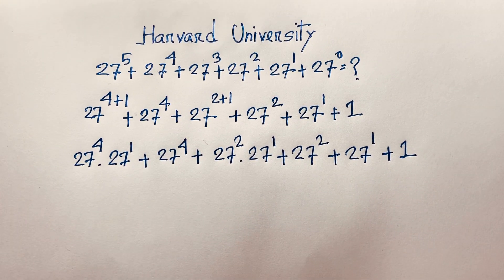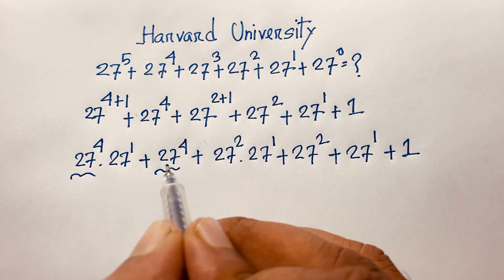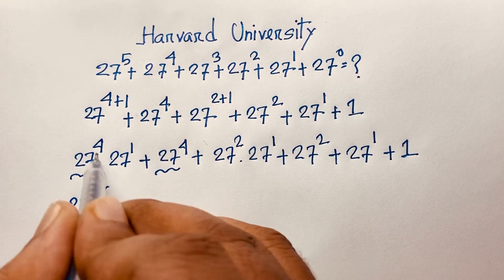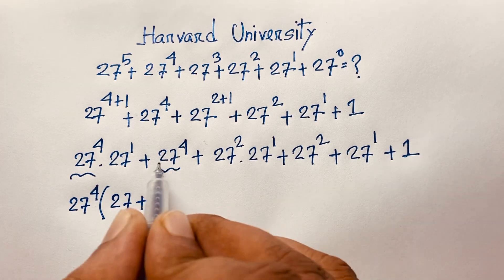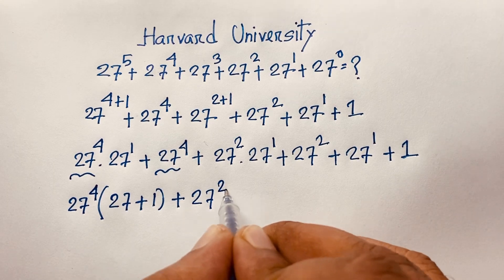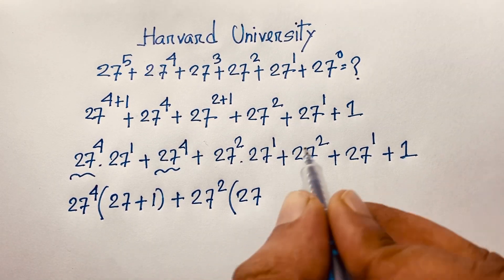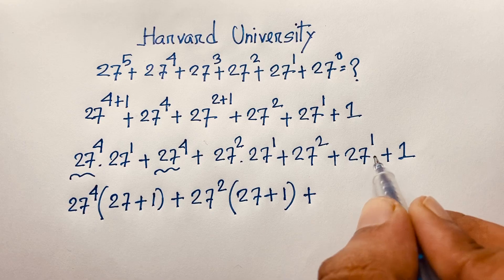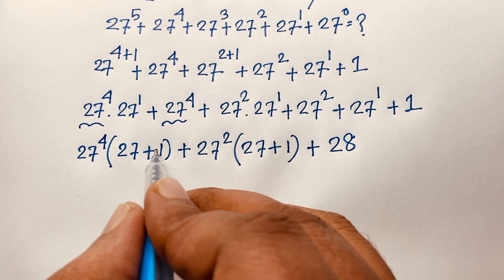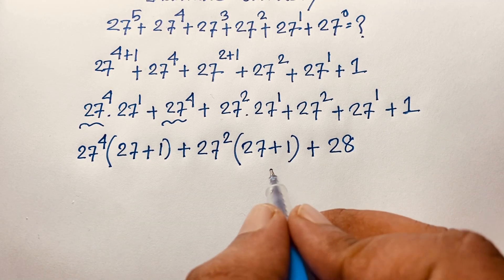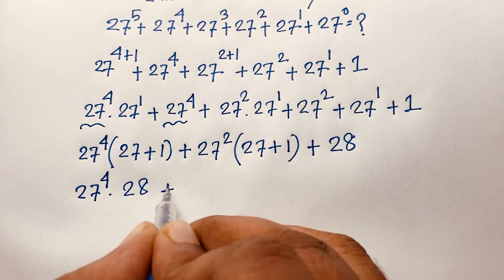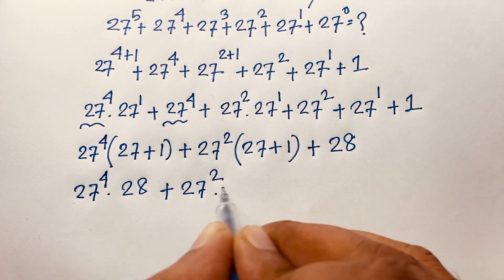Now you can see here is 27 power 4 and 27 power 4 is common, so 27 power 4 divided — this gives 27 plus 1. In this expression, 27 power 2 is common, so it becomes 27 divided gives 1, plus 27 plus 1 which equals 28. You can see 27 plus 1 is 28 and this is also 27 plus 1, which is 28. So this expression becomes 27 power 4 times 28 plus 27 power 2 times 28.